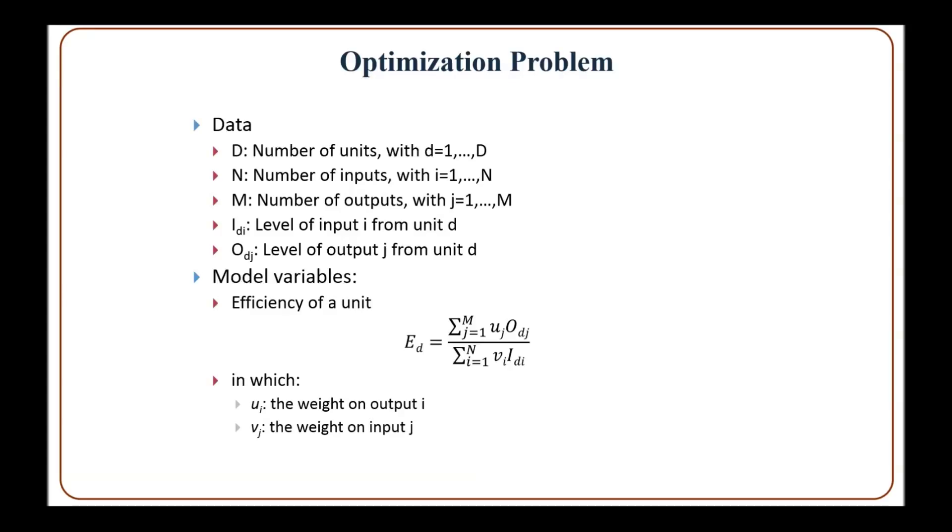The efficiency of a unit E sub D is defined as the weighted sum of the output divided by the weighted sum of the input.